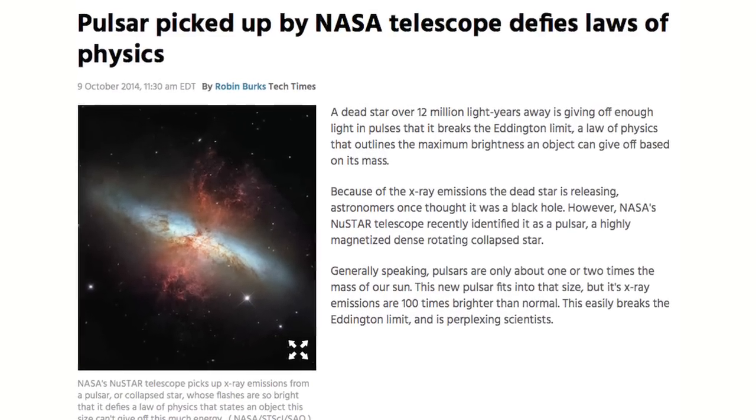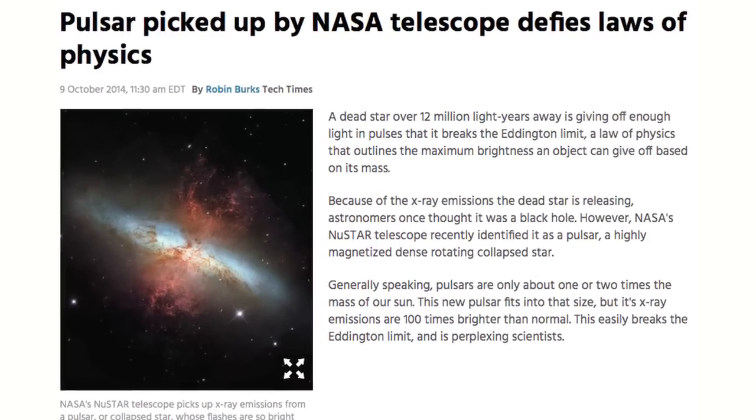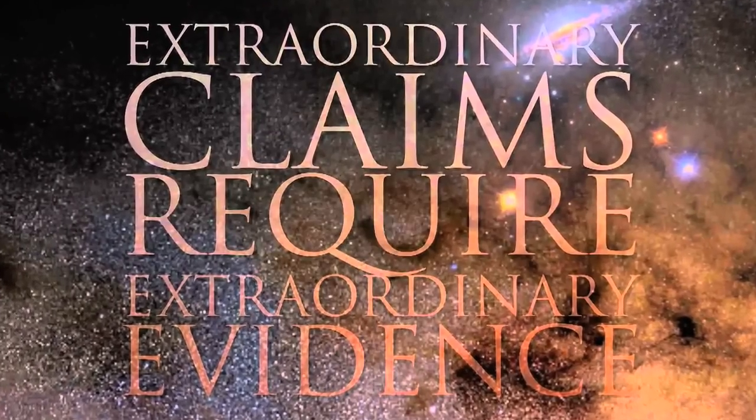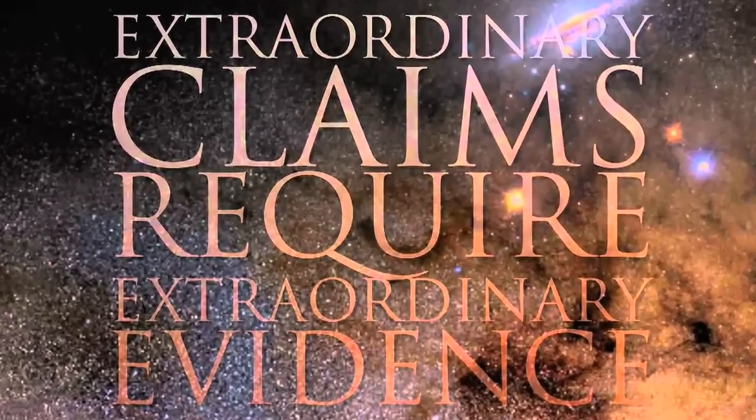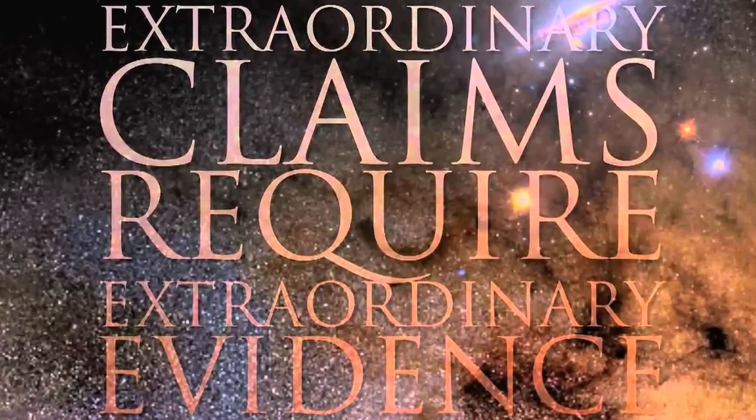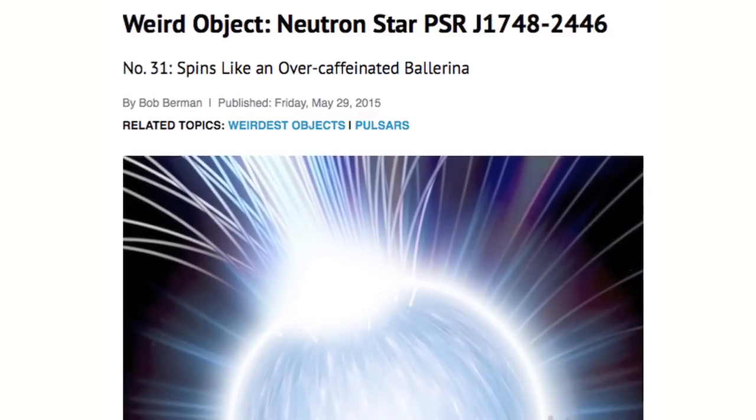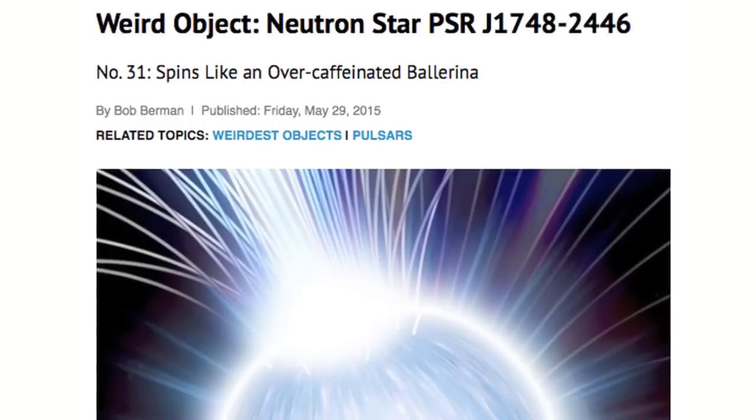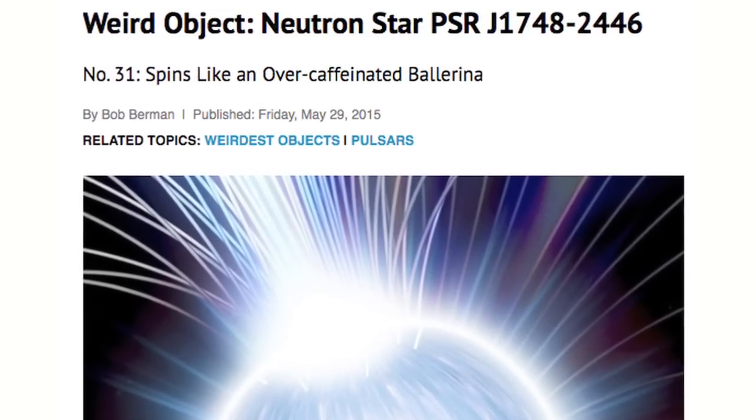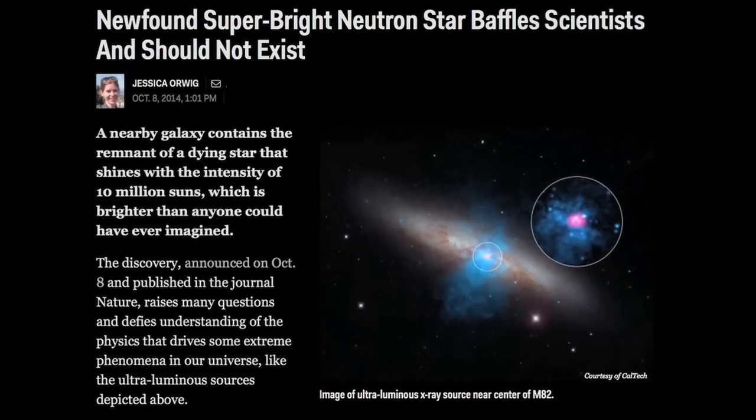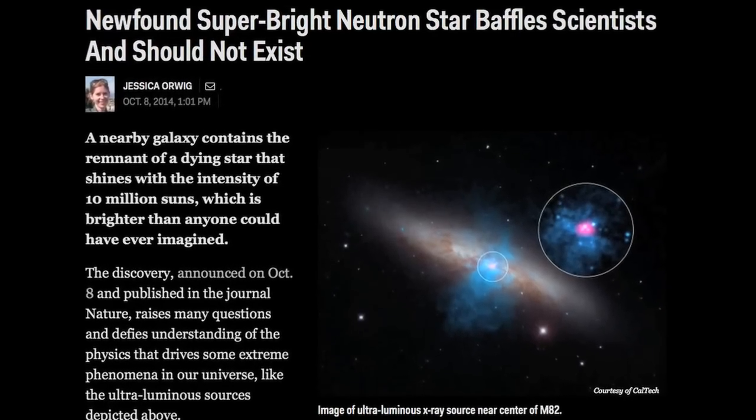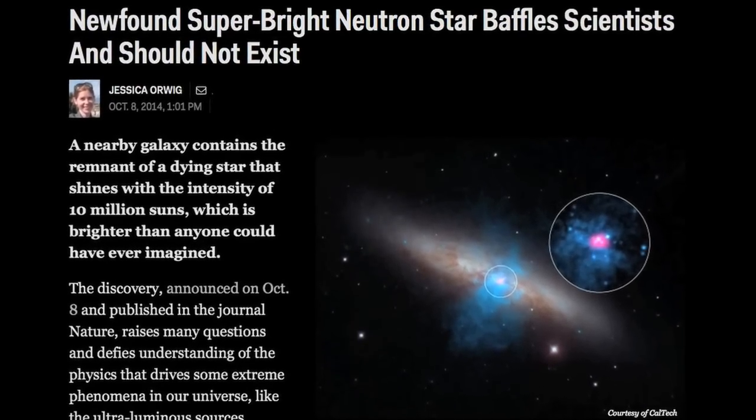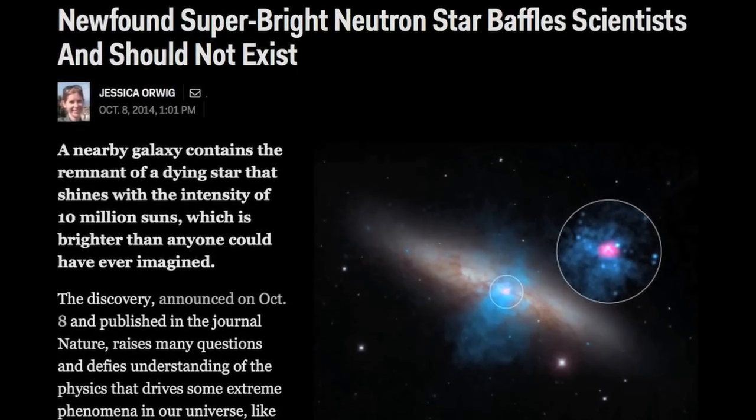The mantra of self-styled skeptics is that extraordinary claims require extraordinary evidence. Astrophysicists freely acknowledge that the neutron star, if it exists, would be one of the most exotic objects in the known universe. But an ongoing series of theory-shattering discoveries have transformed the neutron star hypothesis from exotic, to extraordinary, to perhaps impossible.